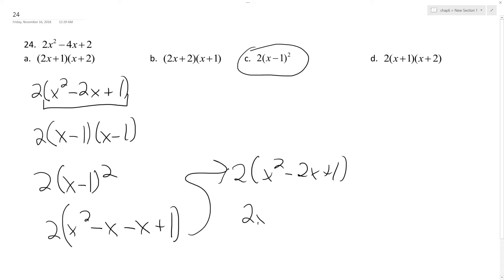Multiply the 2 through. I end up with 2x squared minus 4x plus 2, which is what we started with. So that proves by working backwards that answer C is the correct answer.